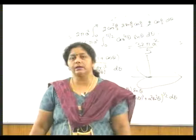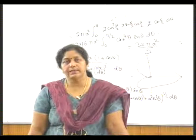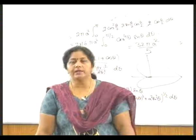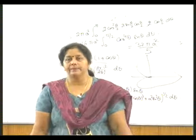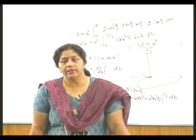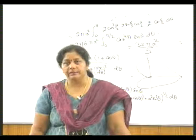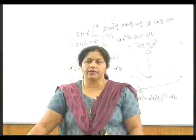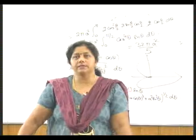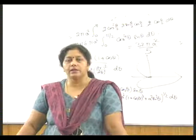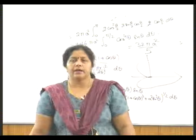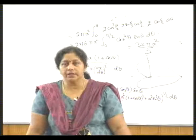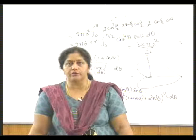If instead of Cartesian form a parametric form is given — meaning x is a function of t and y is also a function of t — then we take the integral as either y dx or x dy, whichever applies, but with limits in terms of t, and dx or dy calculated in terms of t. So the total function becomes a function of t and we calculate accordingly. If a polar curve is given, then the area is directly taken as one-half times the integral of r² dθ, where the limits are in terms of θ.